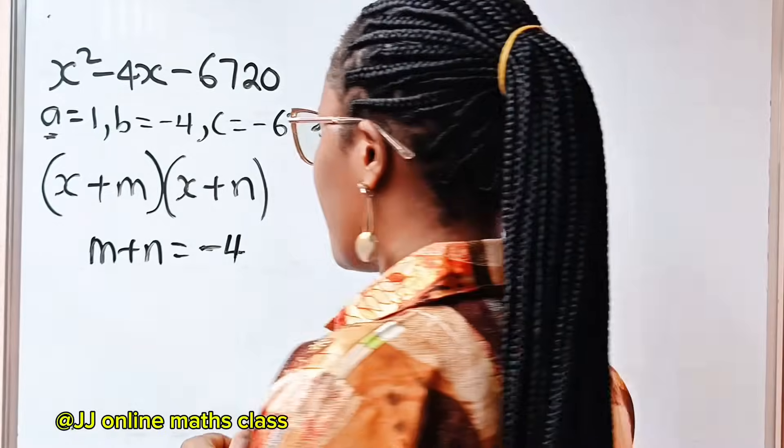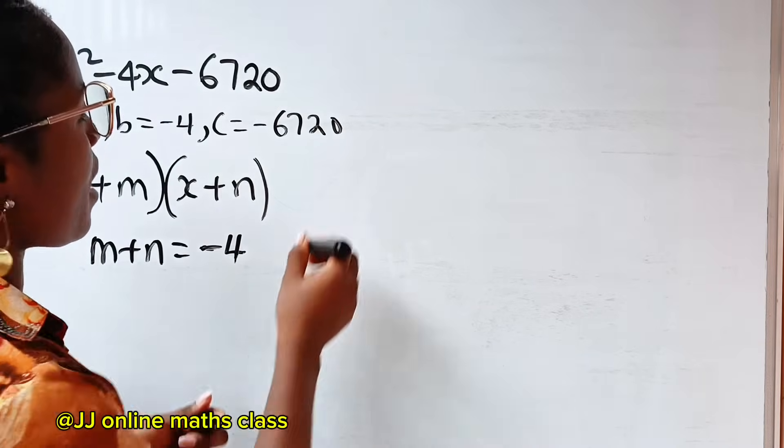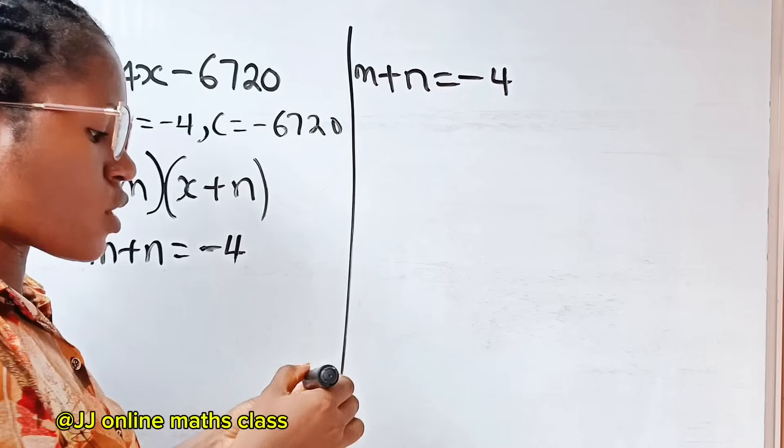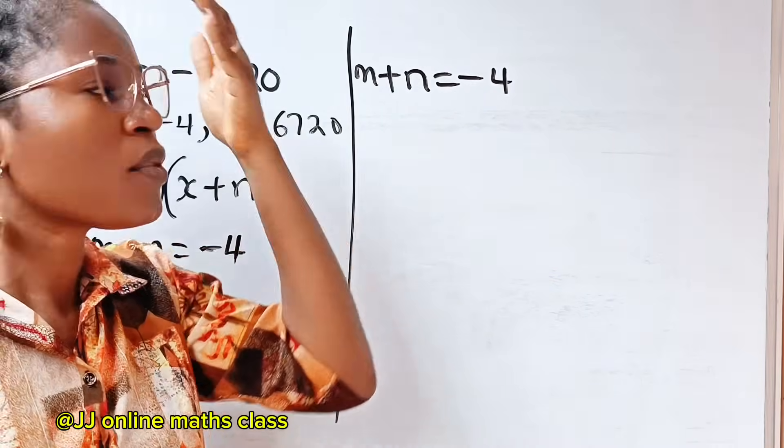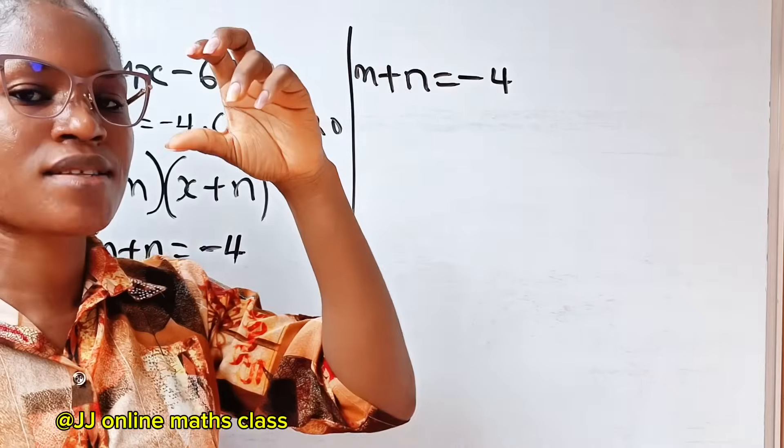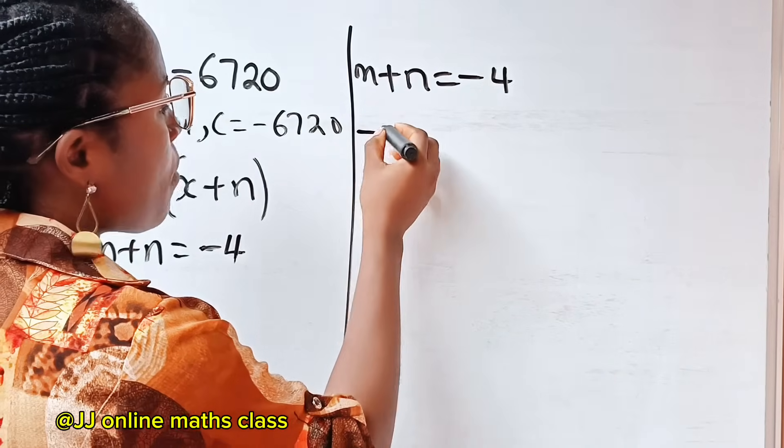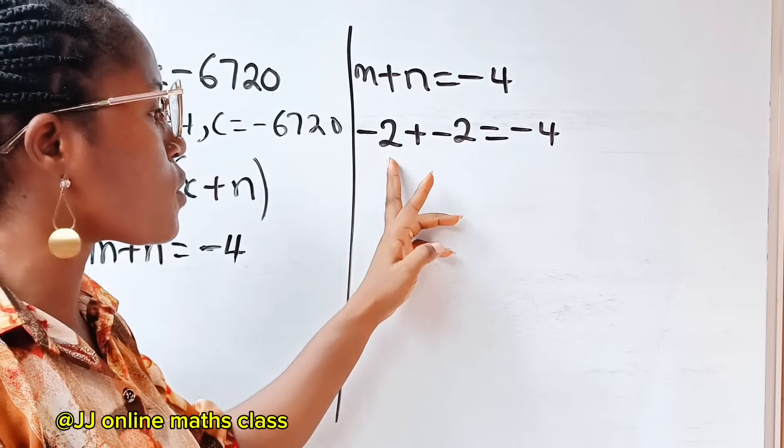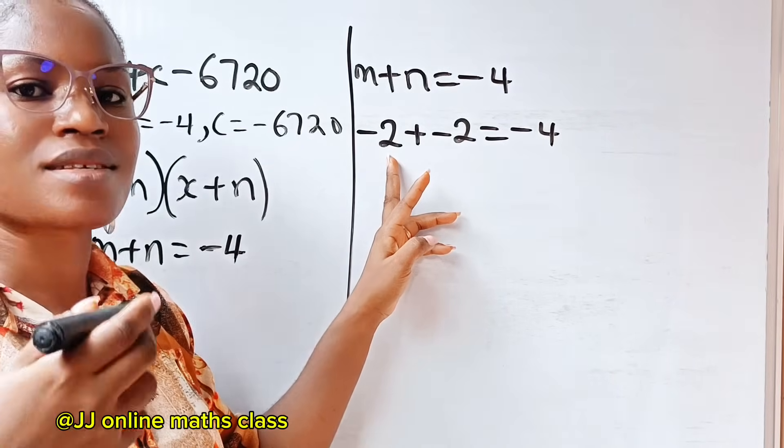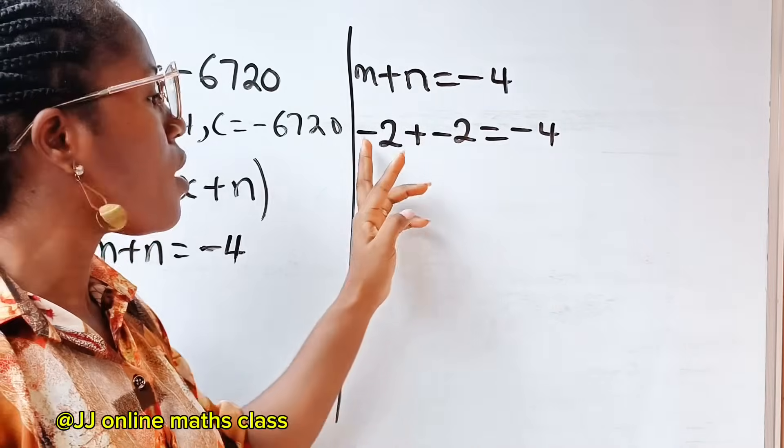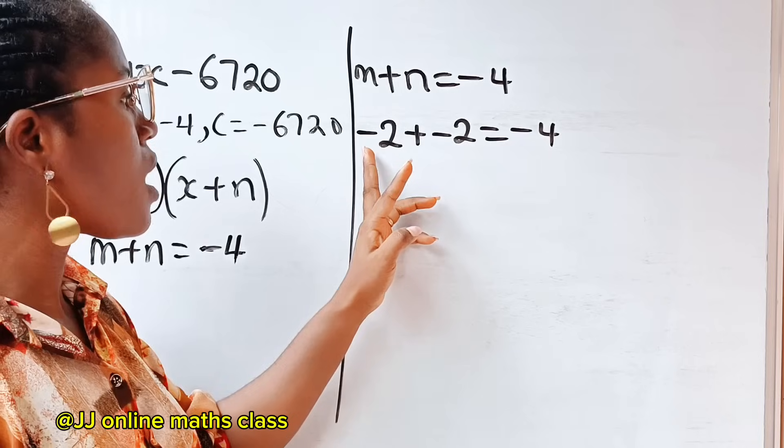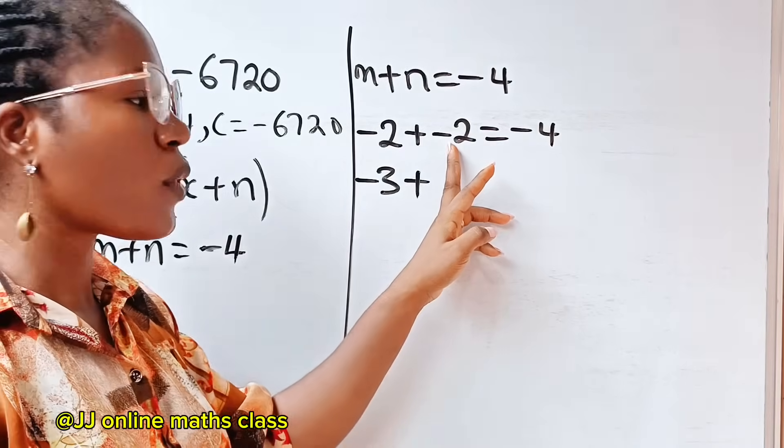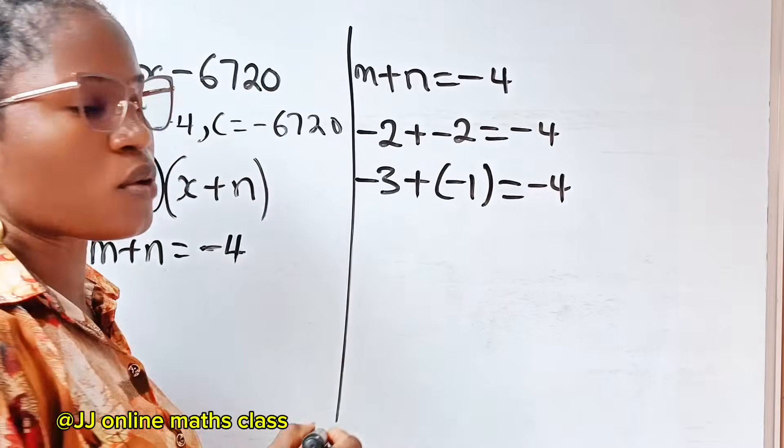Now, I want us to look at something. We know that m plus n will give us minus 4. Let's divide it by 2, we get minus 2. So it means that minus 2 plus minus 2 will give us minus 4. Now, if I should subtract a certain number from minus 2 and add the same number to this minus 2 here, I will still get minus 4. For example, minus 2 minus 1 plus minus 2 plus 1 gives minus 3 plus minus 1, which is still minus 4.